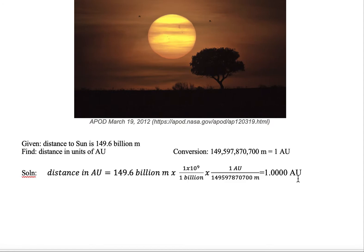So the distance from the Earth to the Sun in units of astronomical units, given that 149.6 billion meters is the distance from the Earth to the Sun, is just one astronomical unit — which makes sense, because that is the definition of the astronomical unit. It is the average distance between the Earth and the Sun taken over one Earth year.